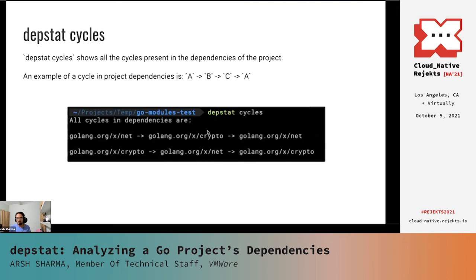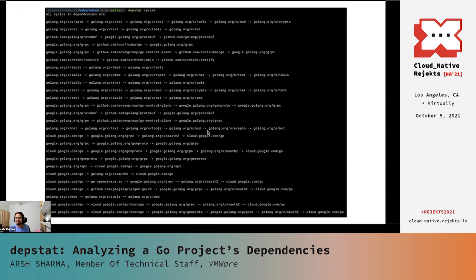The third subcommand that Depstat provides is the cycles subcommand. What this does is show all the cycles present in the dependencies of the project. An example of a cycle in the project dependencies is if A depends on D which depends on C which further again depends on A. For this simple project, you'll see that the cycles in the dependencies are due to xnet depending on xcrypto and vice versa. For Kubernetes though, no surprise, there are many more cycles which are much more complicated, and what you see on screen isn't even the complete output of the command.